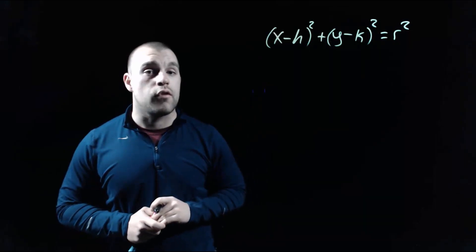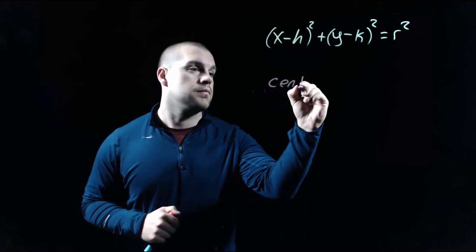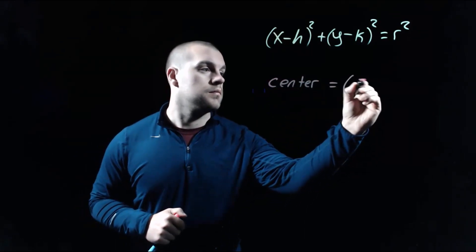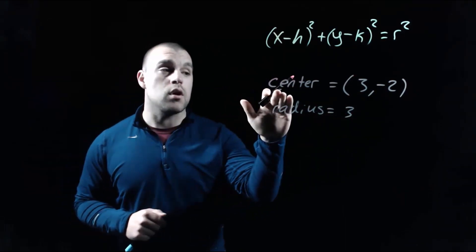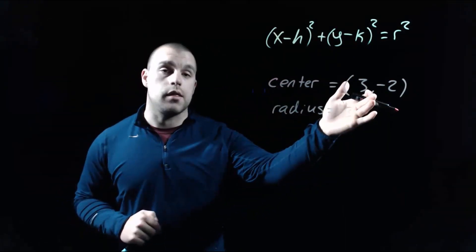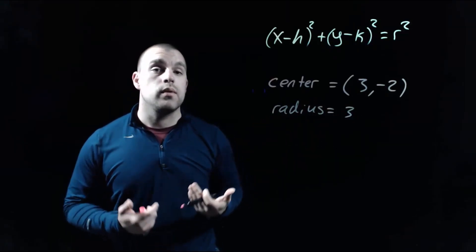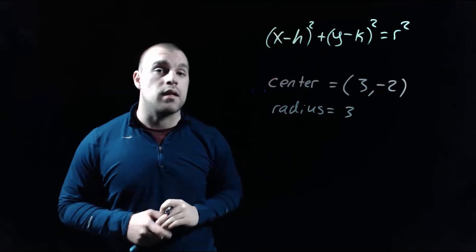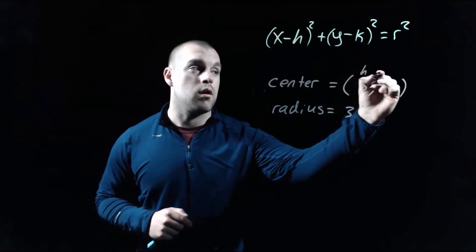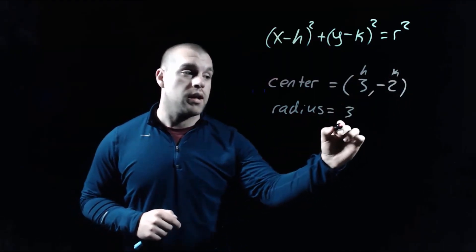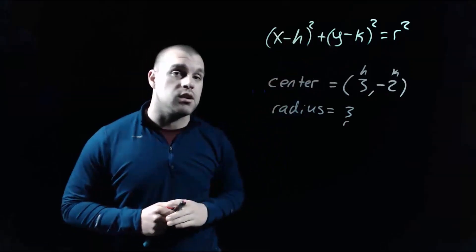Now let's look at our standard form. Let's say we wanted to write out the equation of a circle given some information. Say we were told our center point is at (3, -2) and the length of our radius is 3. We have to take these values and plug them into our standard form. Our center point tells us what our h and k values are, and our radius tells us what our r value is.